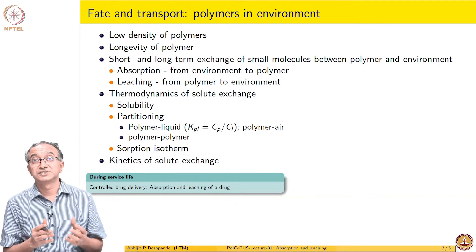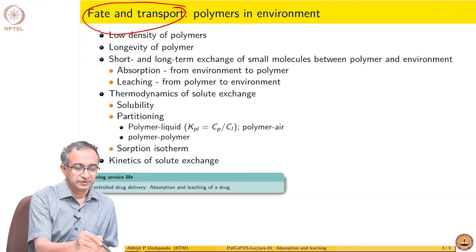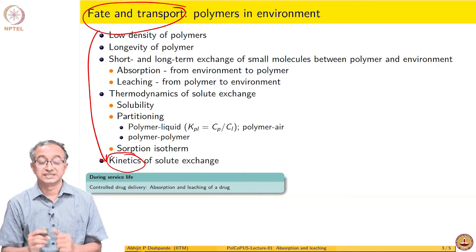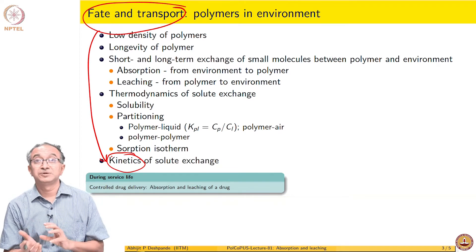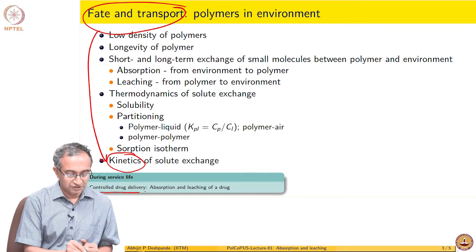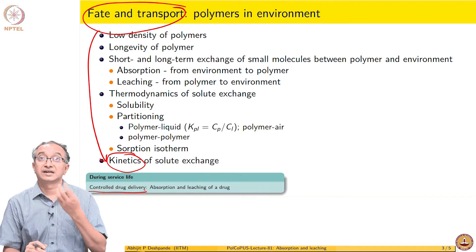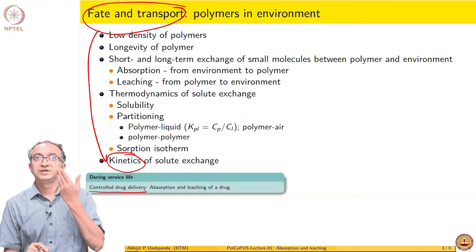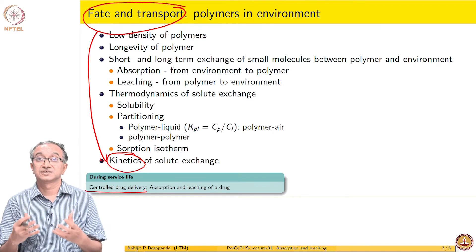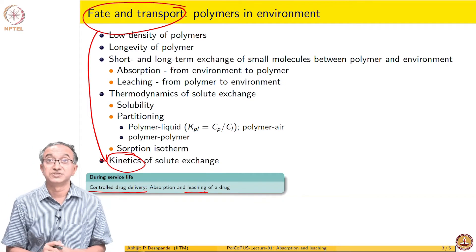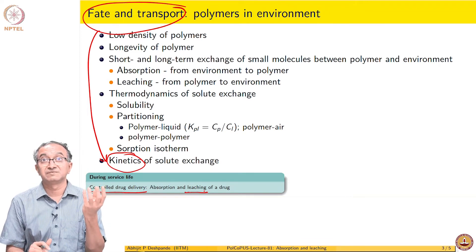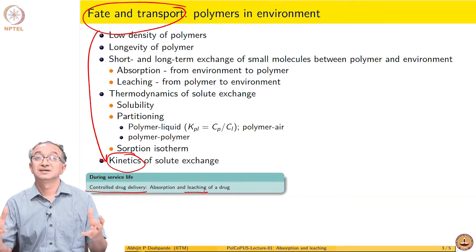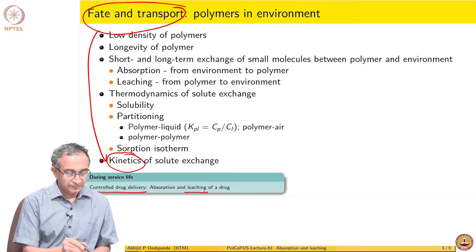An important question related to fate and transport is dependent on kinetics — how fast or slow is this exchange happening? This exchange between polymers and surrounding is in fact exploited in applications. If you have a controlled drug delivery application, we make a gel particle or a drug delivery vehicle. In this vehicle, we absorb the drug molecule, ingest it, and it travels to wherever in our body it is supposed to act — let us say the stomach — and then leaching happens. So the small molecule first has to be absorbed in the drug delivery vehicle, then carried to the stomach, and then it is leached out or released.